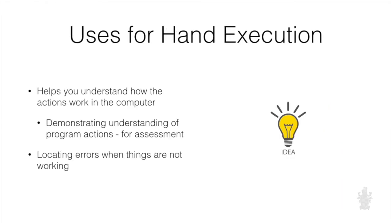The uses for hand execution are: firstly, to help you understand what we're telling the computer to do — when I say this piece of code, what does it mean, what does it get the computer to do? It also gives you a way to demonstrate that you do understand what the computer does, because part of the assessment for this unit is demonstrating your understanding of the different actions and statements in the programming languages. By hand executing something, you're able to show: I can read this code and I can tell you what the computer will do. It's important that with this hand execution process you're trying to demonstrate the process, not just the final answer — this is a process demonstration.